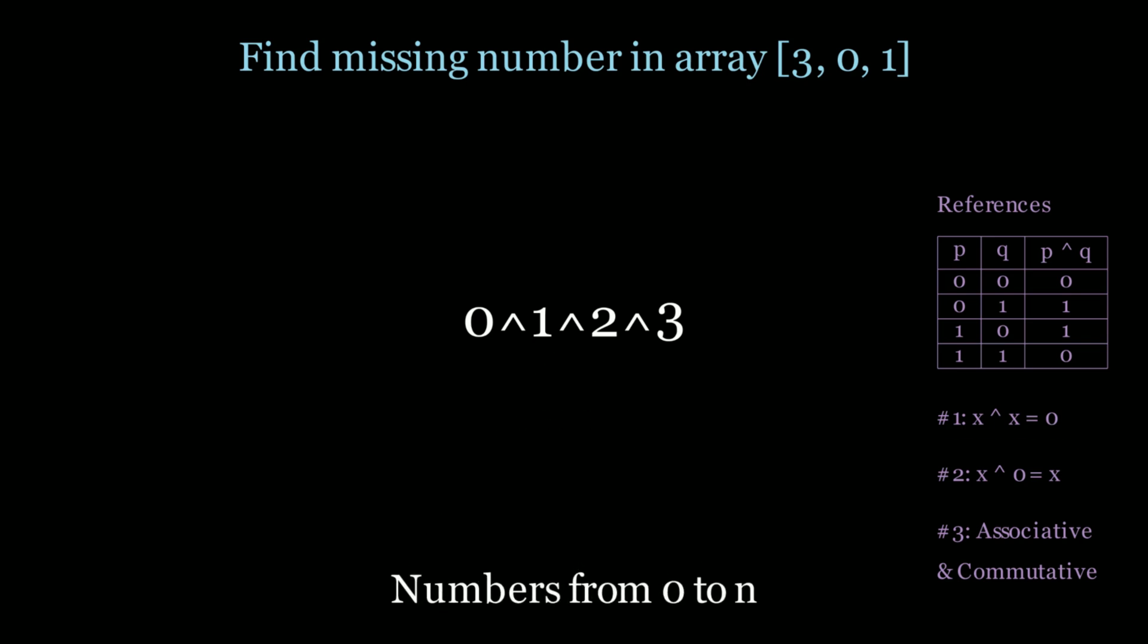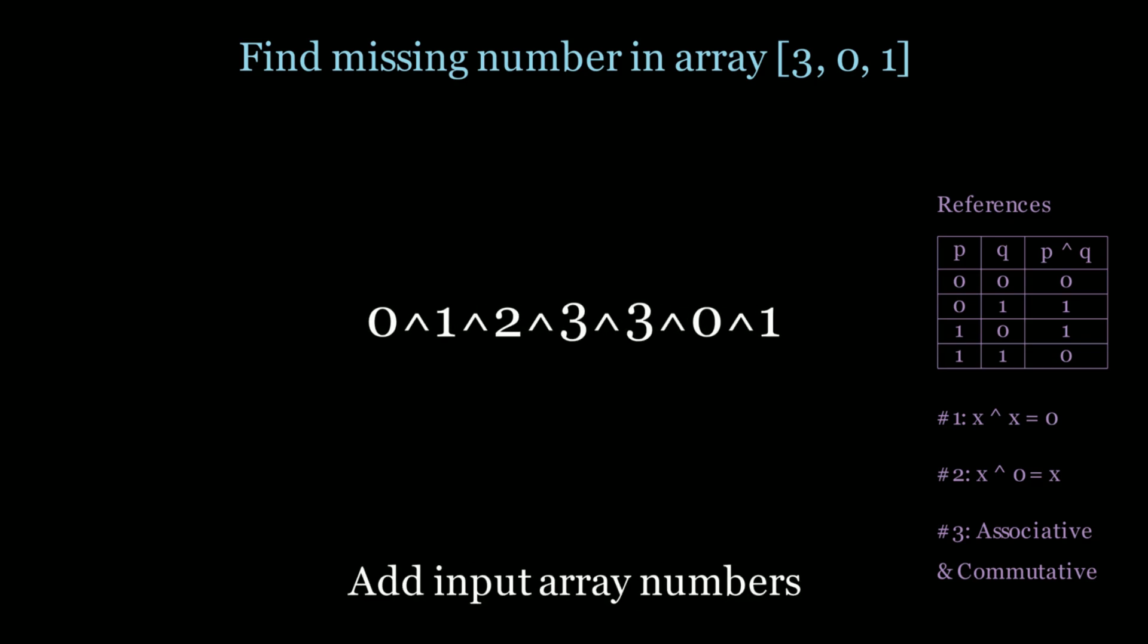And then what I'm gonna do is I'm gonna add the input array numbers as well. So now I'm gonna say 0 XOR 1 XOR 2 XOR 3 was XORing 0 to n. But now I'm gonna XOR the elements in the array as well. So XOR 3 XOR 0 XOR 1. And now we're gonna use our rules that we derived in order to change this format.